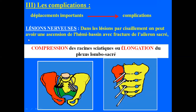Ces fractures du bassin donnent-elles des complications ? Plus les déplacements sont importants, plus les complications sont nombreuses. Les complications nerveuses surviennent surtout dans les lésions par cisaillement : les racines nerveuses du plexus lombo-sacré vont être soit comprimées par le déplacement osseux, soit étirées. Cela peut donner des paralysies totales ou partielles du membre, parfois définitives.